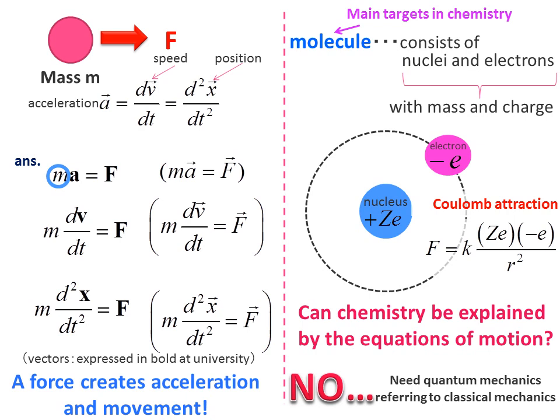Scalars do not have dimensions. Instead of acceleration, you can represent the equation as either the first derivative of velocity v with t or the second derivative of position x with t. In any case, what this formula means is that a force creates acceleration and movement of the object.